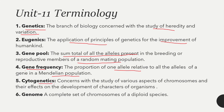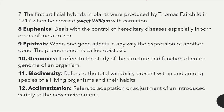Cytogenetics is concerned with the study of various aspects of chromosomes and their effects on the development of characters of organisms. Genome is a complete set of chromosomes of a diploid species. The first artificial hybrid in plants was produced by Thomas Fairchild in 1717 when he crossed sweet william with carnation.